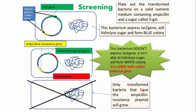Only transformed bacteria that have the ampicillin resistance gene will grow. These are our transformed cells. Bacteria that have not taken up the vector will not survive in the presence of ampicillin antibiotic, as the antibiotic will kill those bacterial cells. Only transformed bacteria will survive under ampicillin antibiotic selection.